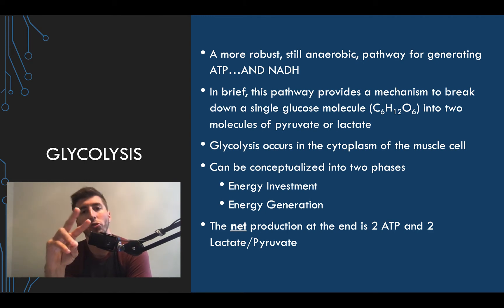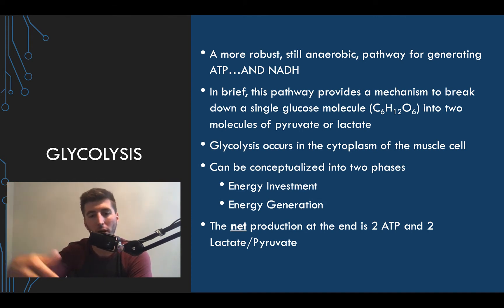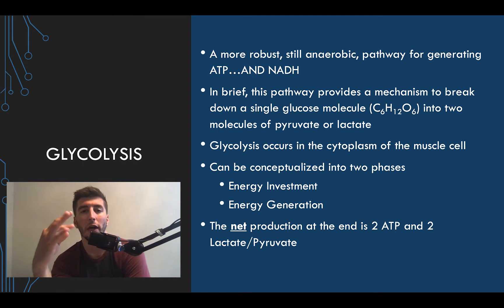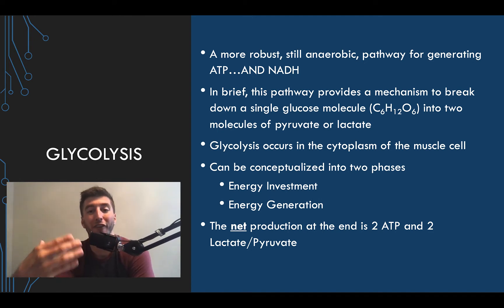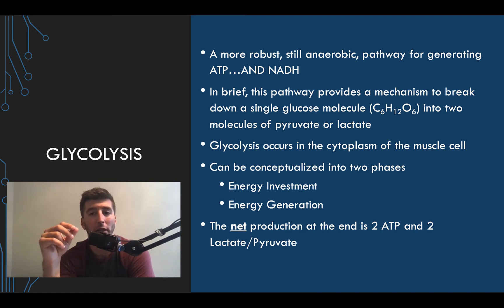Glycolysis can be broken down into two separate and distinct phases. The energy investment phase is where you're putting ATP into the pathway, like a retirement savings plan - putting money in hoping you'll get more out with interest. The second phase is the energy generation phase, where you actually get ATP out - your 401k is finally paying off. The net production at the end of glycolysis is two ATP, plus either two lactate or two pyruvate, and some NADH.